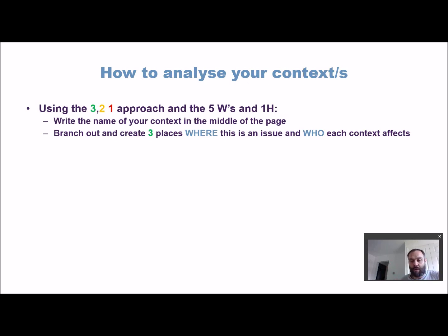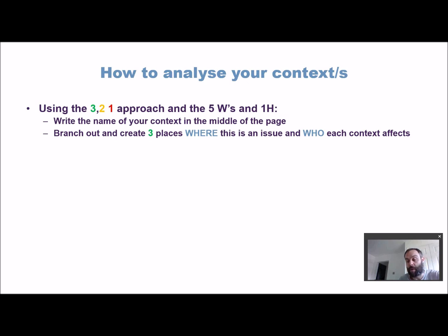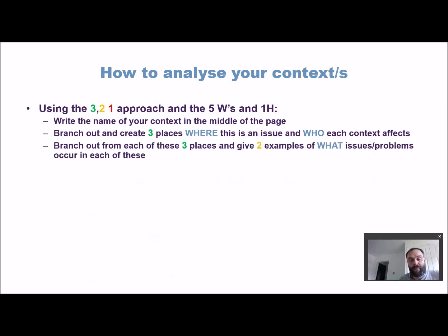From that first central context, branch out and come up with three places where there could be an issue in relation to this context, and also who each of these problems or issues affects. So you've got a context in the middle, then go one, two, three around the outside — list three places, and underneath each place think about who might be there, for example a consumer or a client.